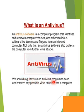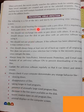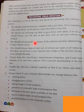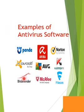An antivirus software also protects the computer from further virus attacks. We should regularly run an antivirus program to scan and remove any possible virus attack from a computer. For preventing virus infection: use antivirus software, avoid booting the computer with a pen drive, do not exchange your disk or pen drive with others, do not use pirated software — always use licensed software — and update the antivirus software regularly. These are examples of antivirus software which we can use in our system to protect our system from viruses.